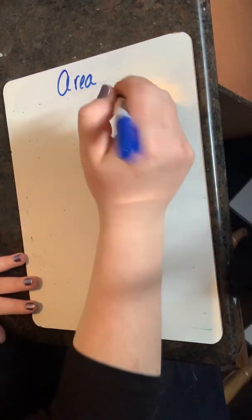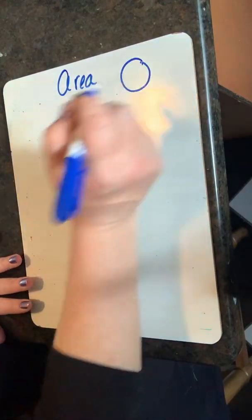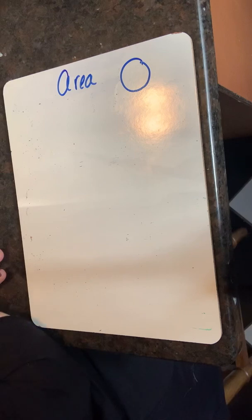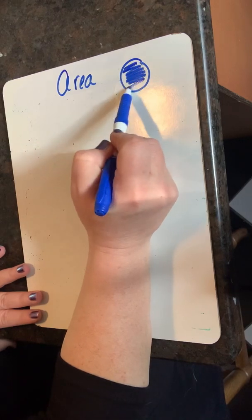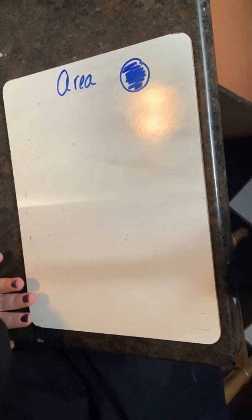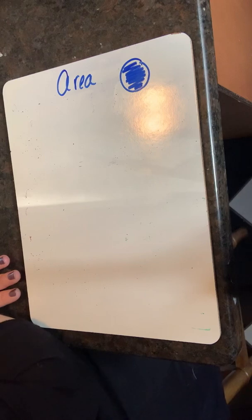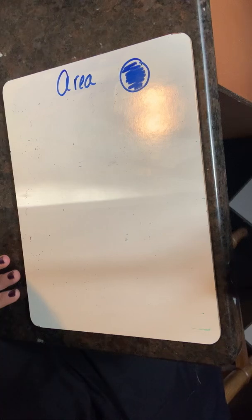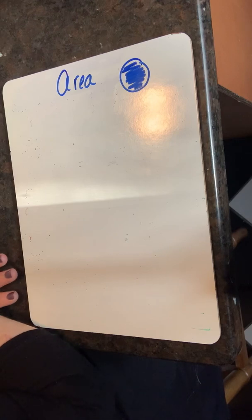Today we're going to talk about area of a circle. Area is the space within a shape. In shapes with straight sides, we use the side measurements to find the area of the shape. But since circles do not have straight sides, we need to use radius and pi.